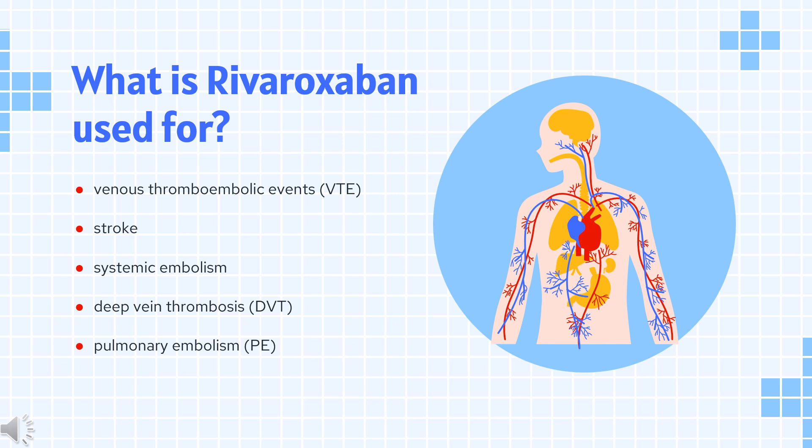Rivaroxaban is also indicated, in combination with aspirin, for reducing the risk of major cardiovascular events in patients with chronic coronary artery disease or peripheral artery disease. It is also not recommended in those with severe renal impairment (less than 30 mL per minute). Rivaroxaban is also indicated for the treatment and prevention of VTE in pediatric patients from birth to 18 years of age, and for thromboprophylaxis in pediatric patients greater than or equal to 2 years old with congenital heart disease following the Fontan procedure.